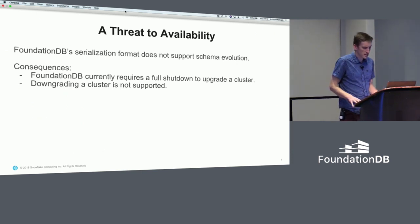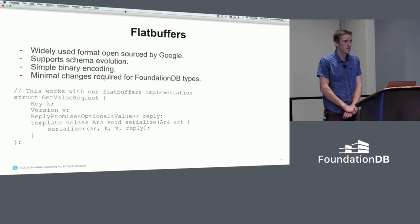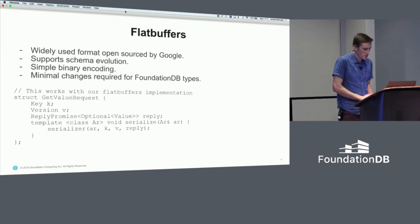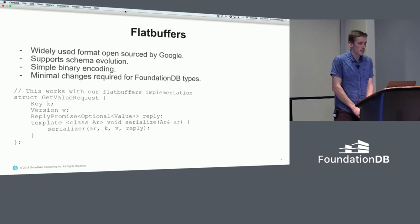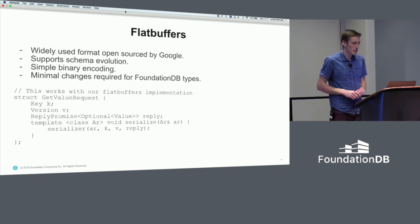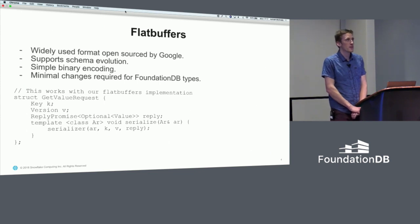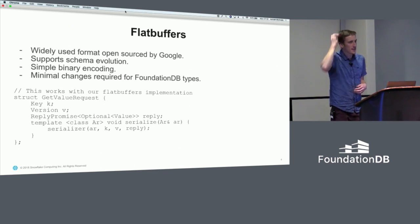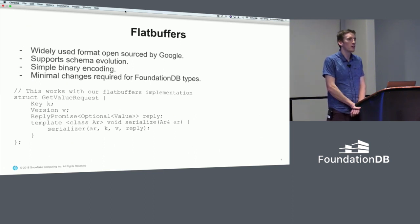So that's one of the reasons why downgrading a cluster is not supported. We have an implementation of Flatbuffers that works with FoundationDB types. FoundationDB uses an idiom for serialization that is a lot like a visitor pattern, and our Flatbuffers implementation also works with this idiom. We chose Flatbuffers because it is already documented and widely used — we didn't want to design our own custom schema evolution solution.